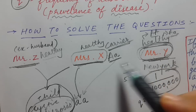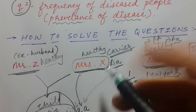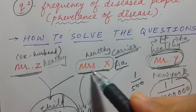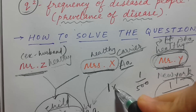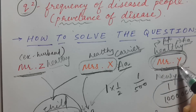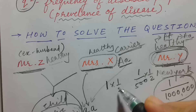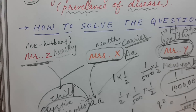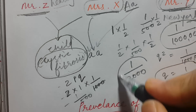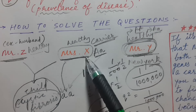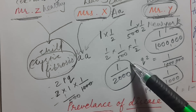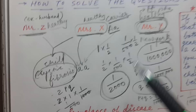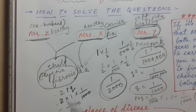So the chances of Mrs. X being a carrier is 1 (we already know she is a carrier), and the chances of Mr. Y being a carrier is 1/500. The chance that Mrs. X passes a mutated gene is 1/2, and the chance that Mr. Y passes a mutated gene if he is a carrier is also 1/2. Multiplying all these: 1 × (1/500) × (1/2) × (1/2) = 1/2,000. So the chance that the child of Mrs. X and Mr. Y will have cystic fibrosis is 1/2,000.